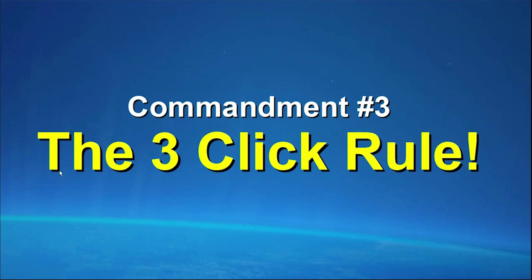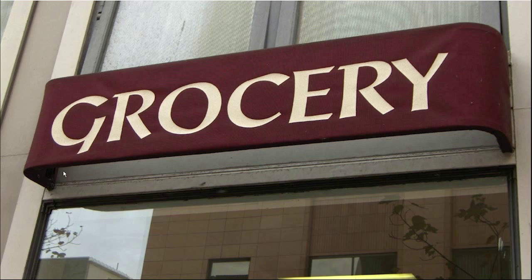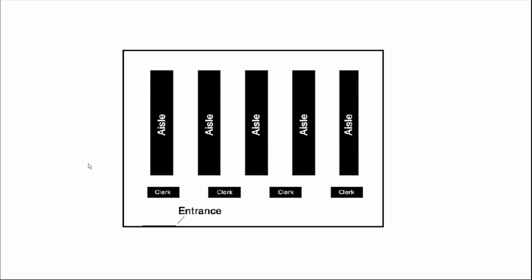Now let's talk about the three-click rule. The previous one was the three-second rule; now let's talk about the three-click rule. Let's start with a little analogy — what I call the grocery store analogy. We're going to compare a website to a grocery store. A lot of science has gone into grocery stores. This is kind of a map looking down at a grocery store — they put the cash registers up front and then have all the aisles with different foods you can go down.